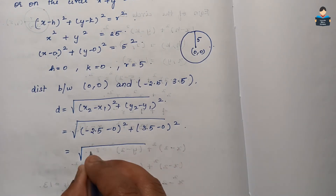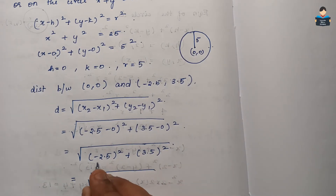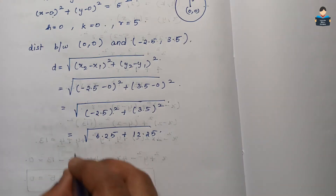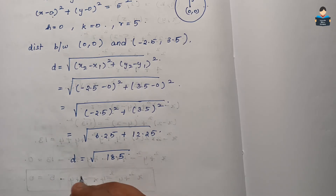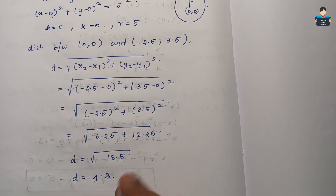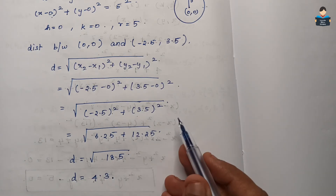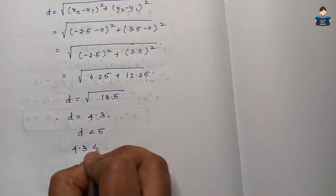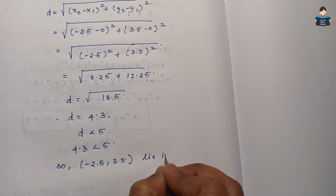Solving: (-2.5)² = 6.25 and (3.5)² = 12.25, so d = √(6.25 + 12.25) = √18.5 ≈ 4.3. The distance d ≈ 4.3, which is the distance between the center (0,0) and the point (-2.5, 3.5). Since the radius is 5 and d = 4.3, we have d < 5.